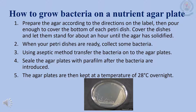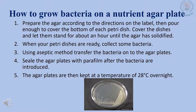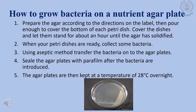When your petri dishes are ready, collect some bacteria. Using an aseptic method, transfer the bacteria onto the agar plates. Seal the plates with parafilm after the bacteria are introduced. The agar plates are then kept at a temperature of 28 degrees Celsius overnight. Finally, label all petri dishes with your name, class, date and name of the organism. The next morning, you can observe colonies of bacteria as shown in the diagram below.